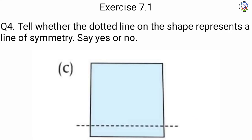Next is C — we have a figure of a square, but our line of symmetry is not cutting this shape into two equal halves. जो line of symmetry draw की गई है वो दो equal parts में shape को cut नहीं कर रही है, so इसके लिए भी हम लोग लिखेंगे no.